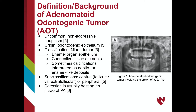Adenomatoid odontogenic tumors, or AOTs, are uncommon, non-aggressive neoplasms. They arise from the odontogenic epithelium and are classified as a mixed tumor, due to them usually containing connective tissue elements, dentin, and enamel-like calcifications.